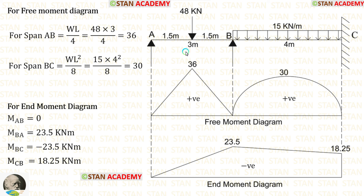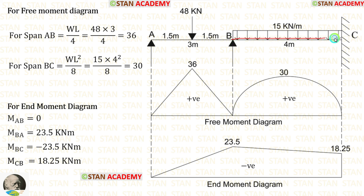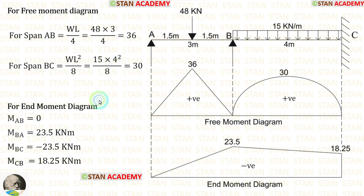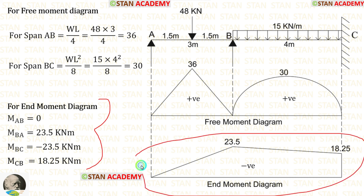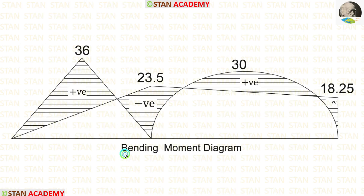Now we make the bending moment diagram. First we make the free moment diagram by assuming each span as a simply supported beam. In span AB with a central point load, the maximum BM = WL/4 = 36 kN·m. In span BC with full UDL, the maximum BM = WL²/8 = 30 kN·m. The end moment diagram is made from the calculated end moments, and combining the free moment and end moment diagrams gives the final bending moment diagram.